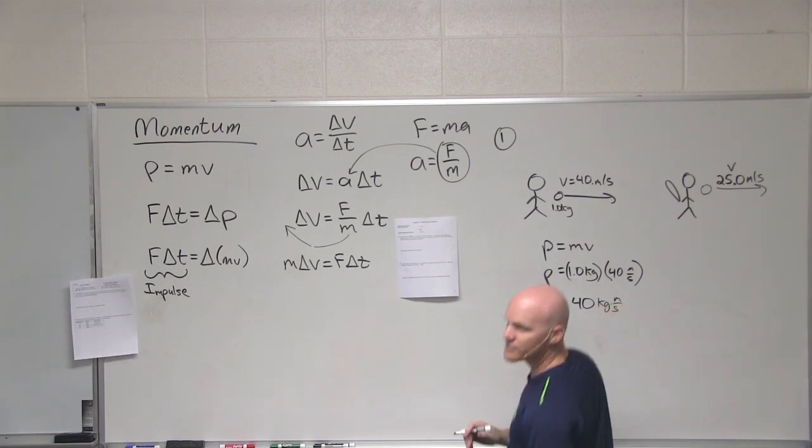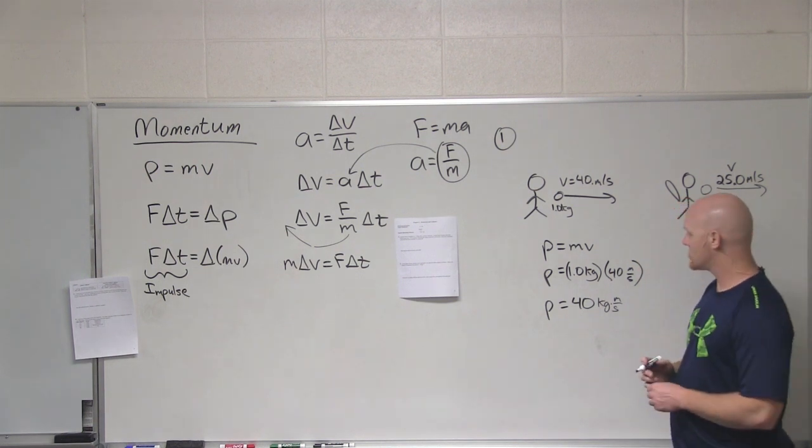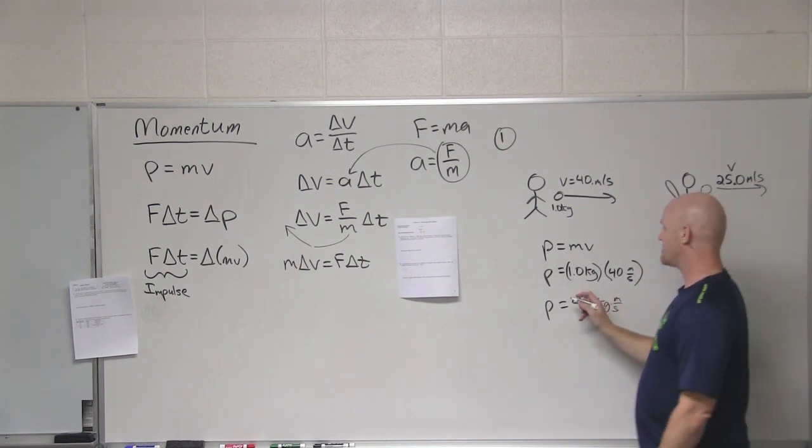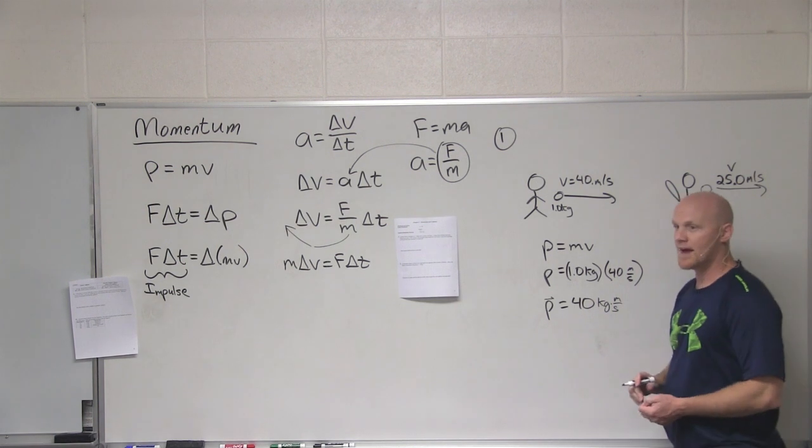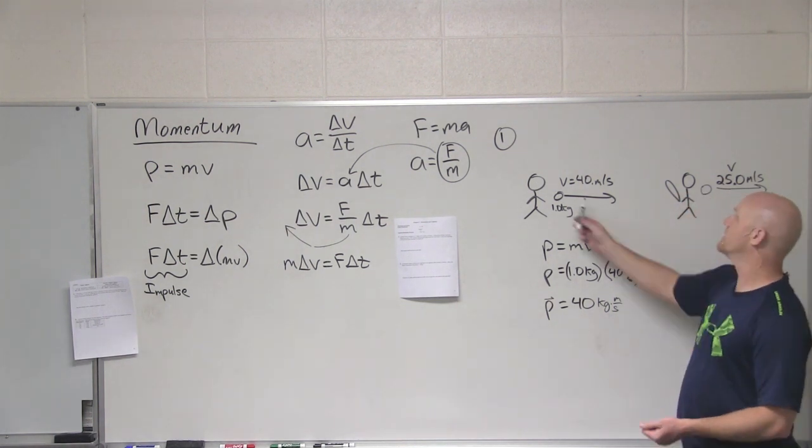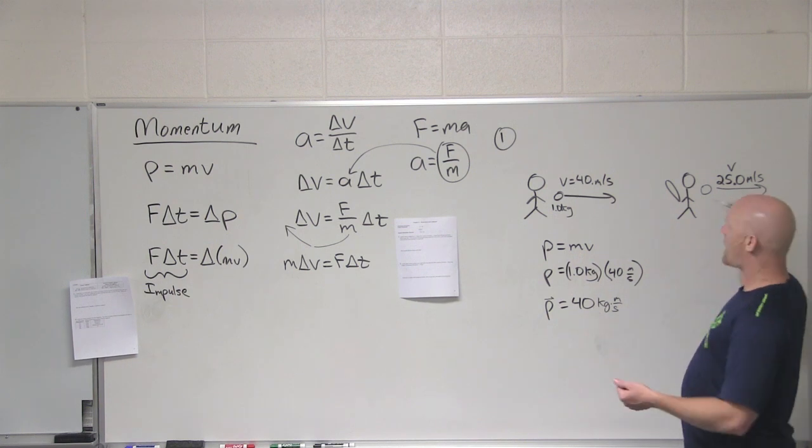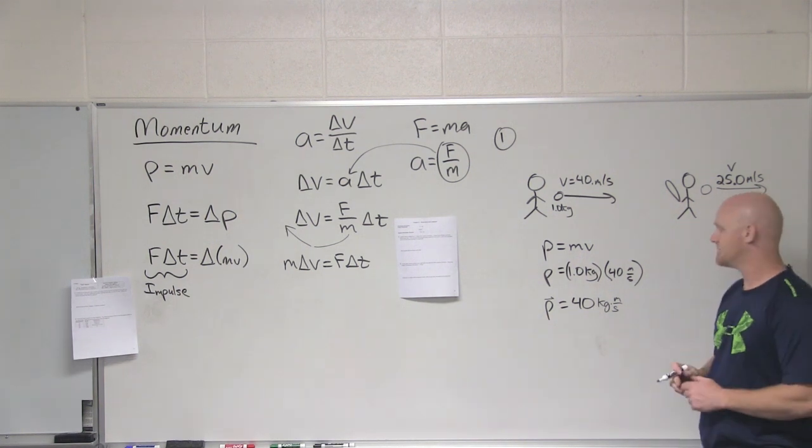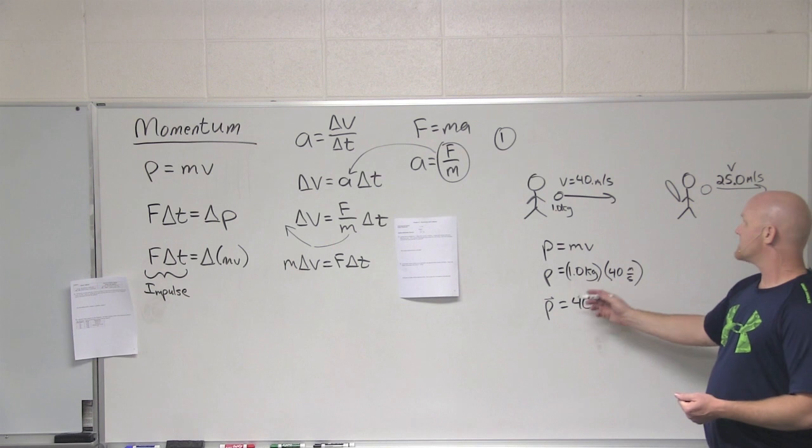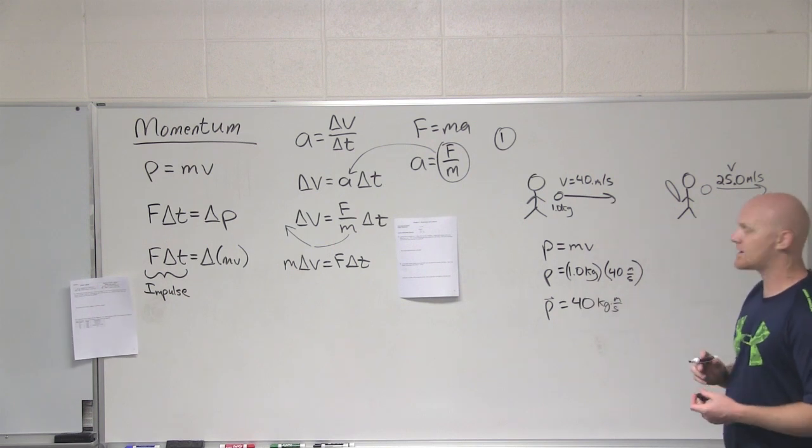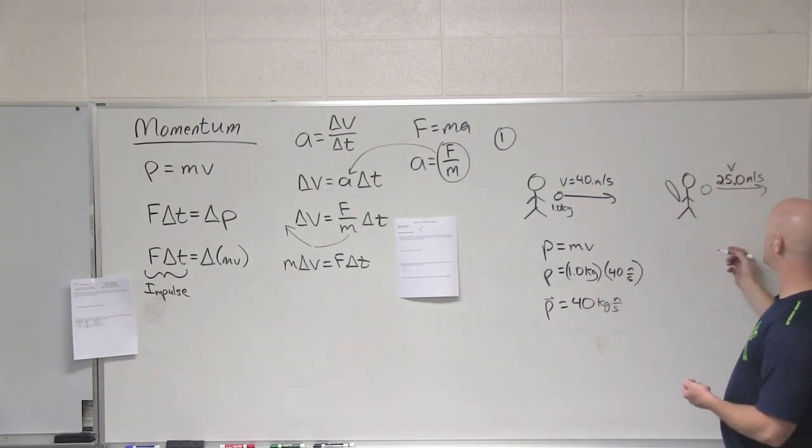Yeah, there's no special unit for it, it's just kilogram meters per second. But one thing you should realize, momentum is a vector quantity. It has both magnitude and direction. So this is the magnitude, the direction is just whatever direction it was heading here. I'm going to call it positive 40. The opposite direction would be negative 40, and so on and so forth. So that's its momentum before it contacts the bat.